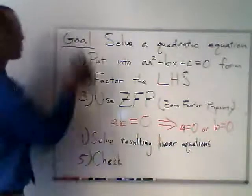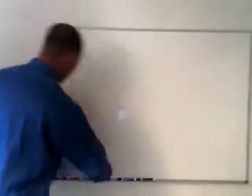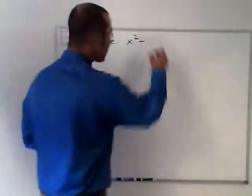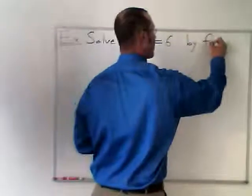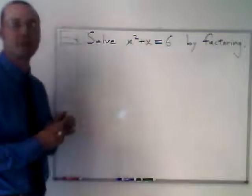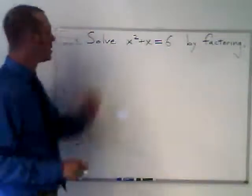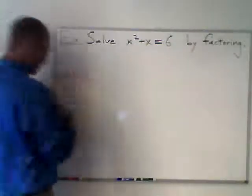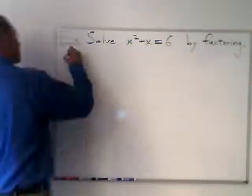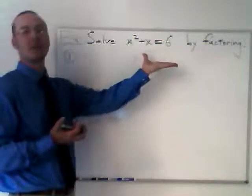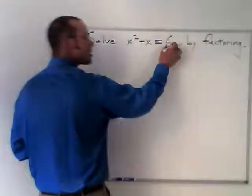All right. So let's use this procedure to work through an example. If the problem says just solve it, you can use any of the four methods that I mentioned. We'll cover the other three next session. But here it says to solve by factoring, we need to use this method to find the solution. The first step is to put this into the AX squared plus BX plus C equals zero form. All we need to do there is to get this six over to the other side.